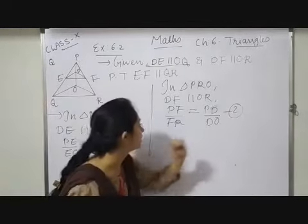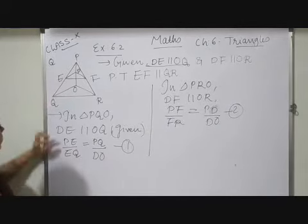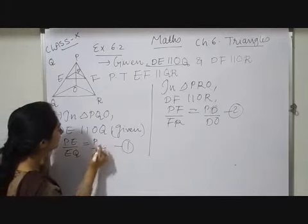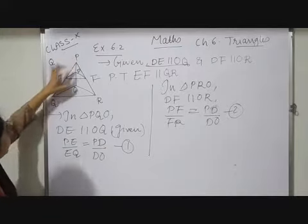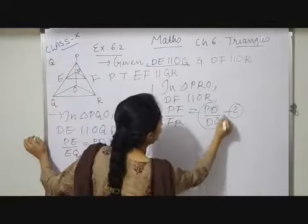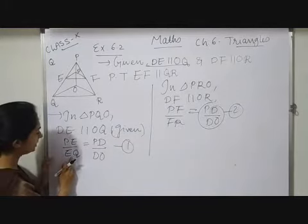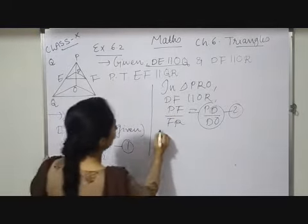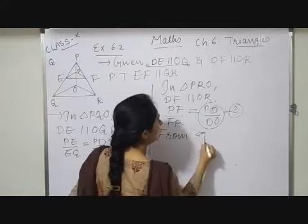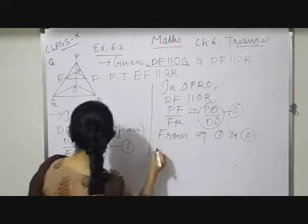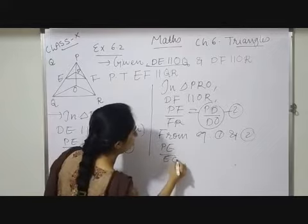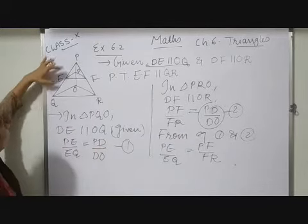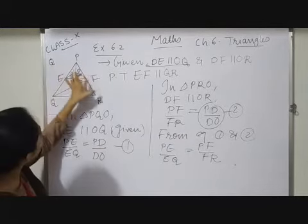Now observe equation number 1 and equation number 2. From equation 1: PE upon EQ equals PD upon DO. From equation 1 and 2, the PD upon DO will cancel out, and I can write: PE upon EQ equals PF upon FR.